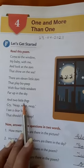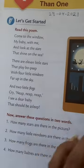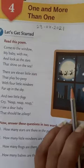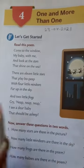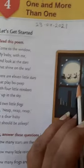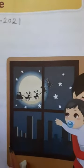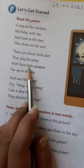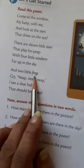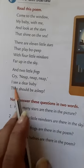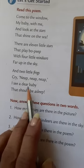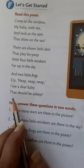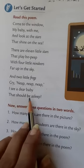And two little frogs — the frogs may not be clearly visible in the picture, they might be somewhere in the illustration. Look carefully at the two little frogs in the picture. 'Two little frogs cry nap, nap, nap. I see the dear baby that should be asleep' — the baby who has fallen asleep listening to mama's story.